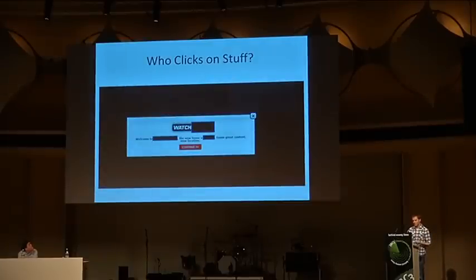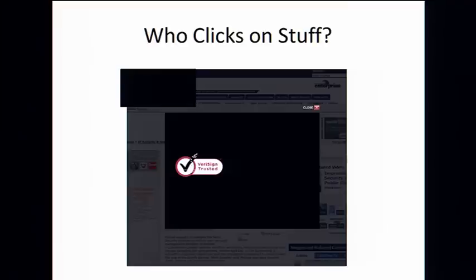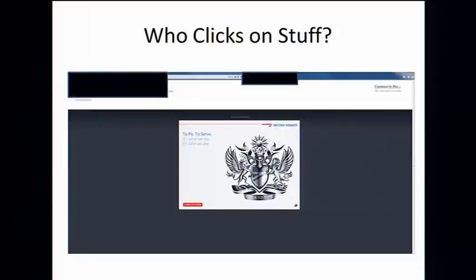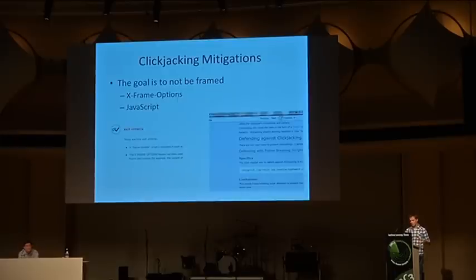Maybe it's because it's hard to get people to click on something. So we don't care about clickjacking that much, but if it's convenient, we will try to defend against it. Our goal is to not be framed — if our web application can be framed, then we've lost. There are two typical ways to do this: X-Frame-Options and using JavaScript. X-Frame-Options is an HTTP header sent in an HTTP response, pioneered by the IE team but now supported by all major browsers.